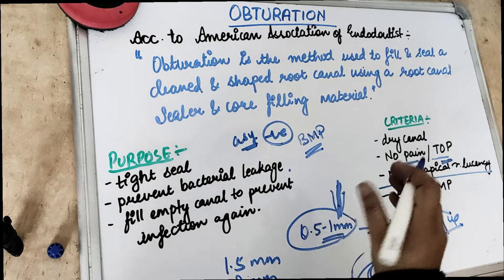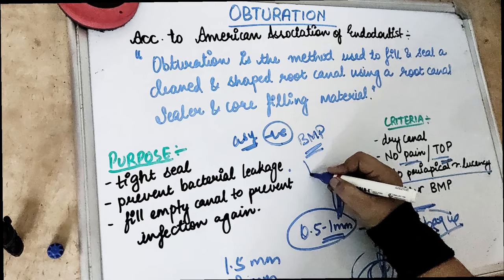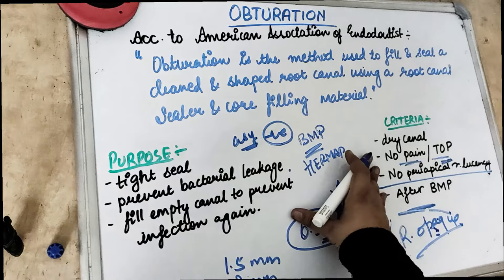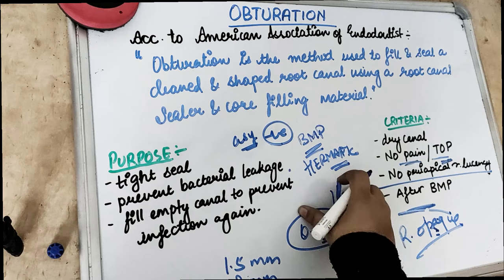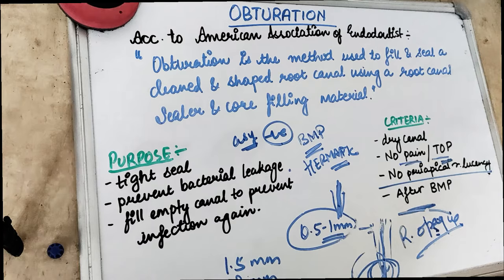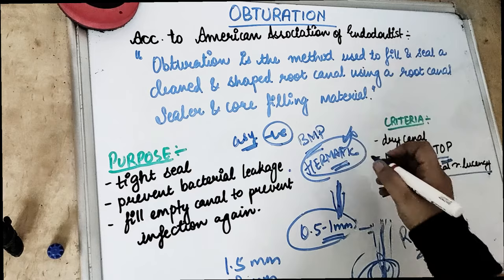There was a previous myth or misconception about the hermetic seal — a seal against the escape or entry of air, basically an airtight seal. The idea that obturation should be airtight is a myth or misconception which is not used nowadays.